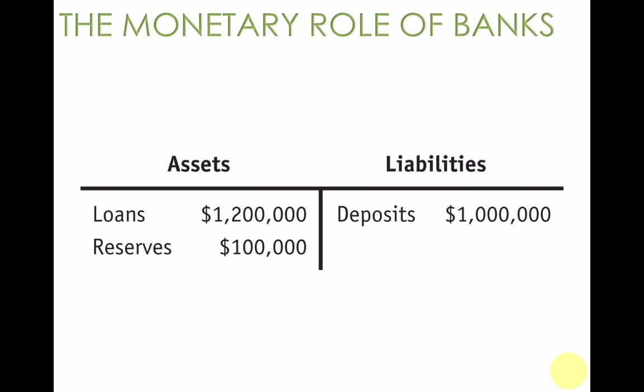Here are some terms. Banks have assets in the form of loans that are owed to them by customers, and reserves on hand — money they have not yet loaned out. On the liability side are the deposits: what they owe you and I when we walk in and want to withdraw.